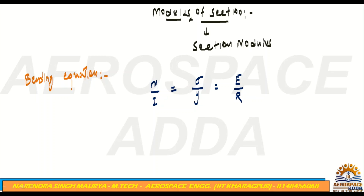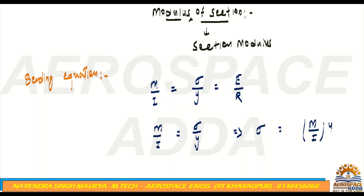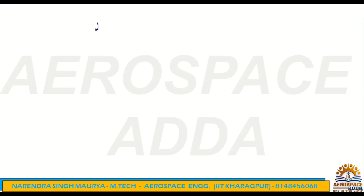Now, coming to the same formula for Section Modulus. How to define the Section Modulus? We can write the first two terms: M by I and sigma by Y. So bending stress sigma equals M divided by I, into Y.